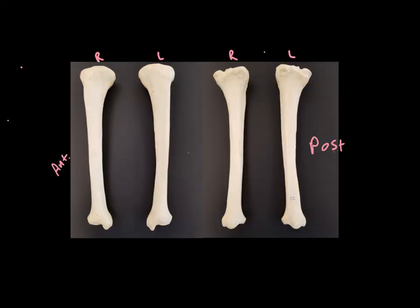Now we move down to the lower leg and there's two bones in the lower leg. The one we're looking at here is the larger of the two. This is the tibia. Next we will look at the fibula.